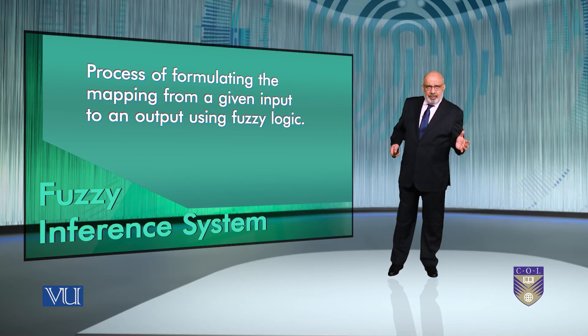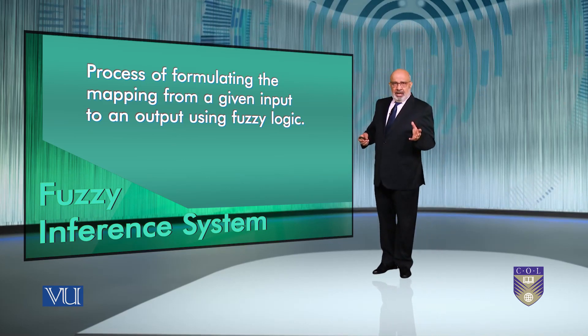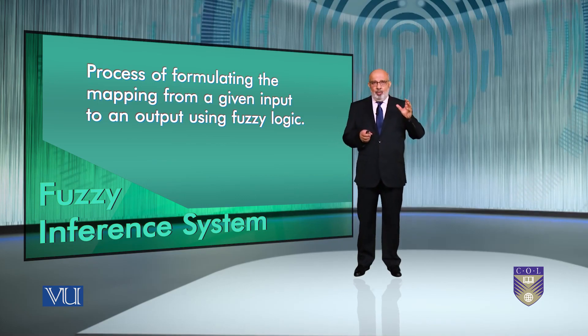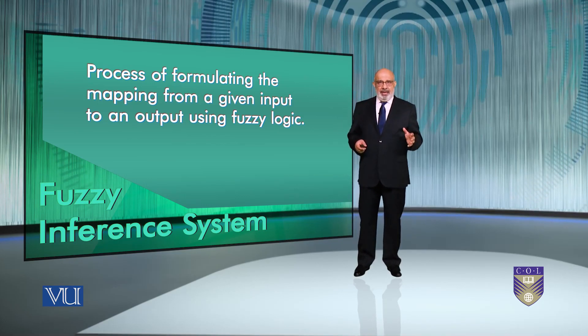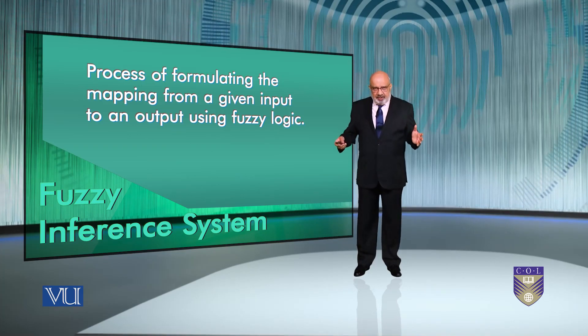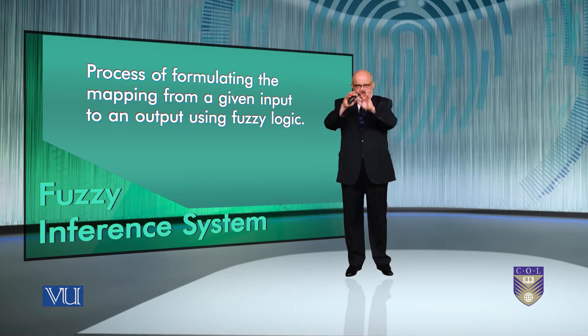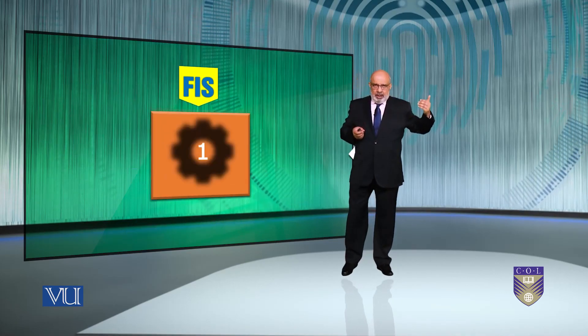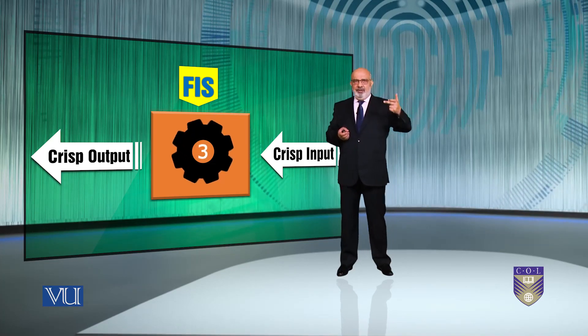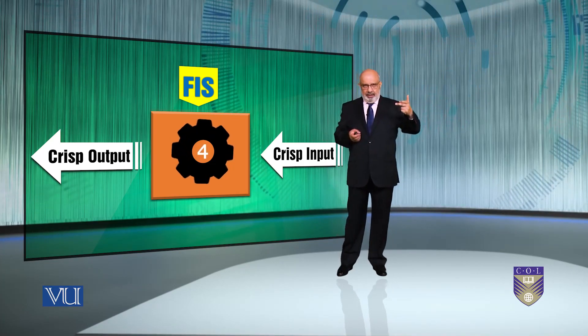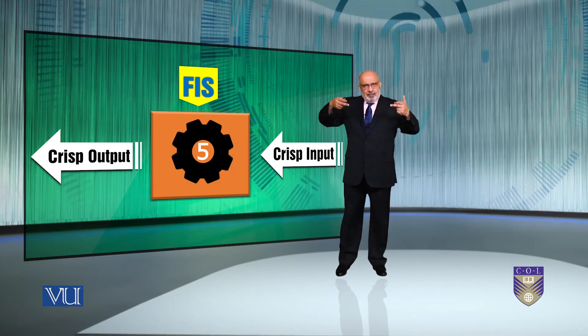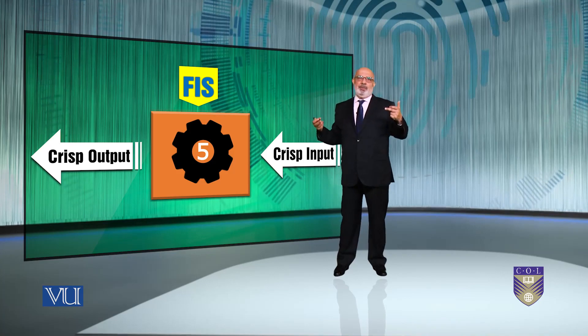So what I'm saying is, it provides a mapping. This mapping provides a basis from which decisions can be made or patterns discerned in the fuzzy logic system. If I were to take that as a black box, the input to a fuzzy inference system, FIS, is a crisp input. That goes through various steps I'm going to talk about, the five steps, and then produces another crisp output.